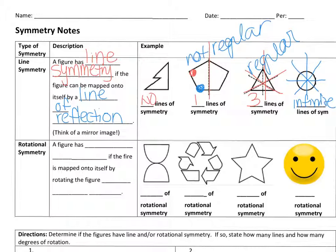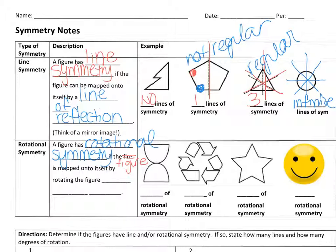So that's lines of symmetry — if it is regular and has three congruent sides, it has three lines of symmetry. Now let's talk about rotational symmetry. A figure has rotational symmetry if the figure is mapped onto itself by rotating it. The key for rotational symmetry is that the rotation must be less than 360 degrees.